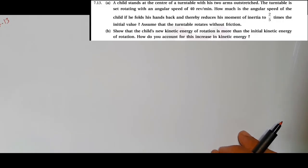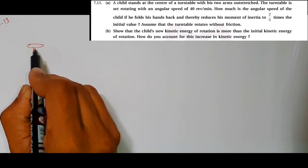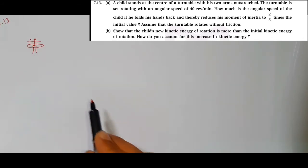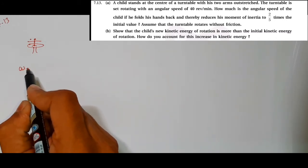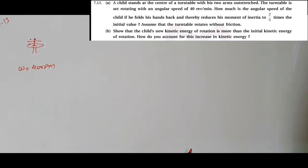Hello students, Exercise 7.13: A child stands at the center of a turntable with his two arms outstretched. The turntable is rotating with an angular speed of 40 rpm (rotations per minute).